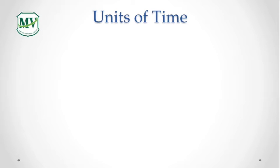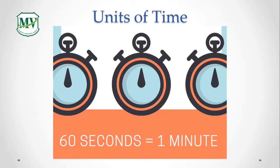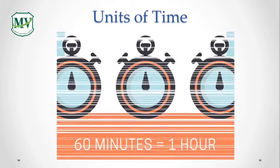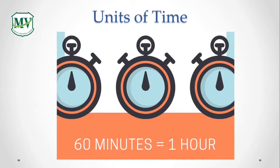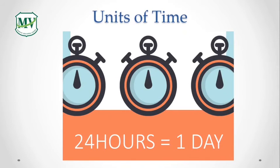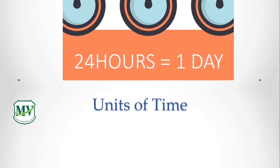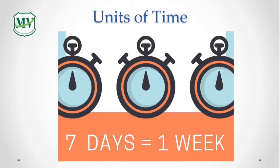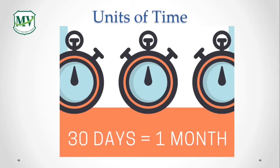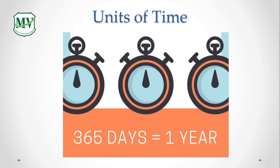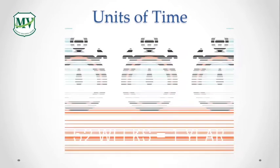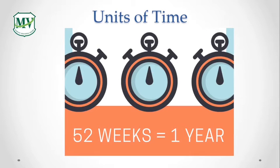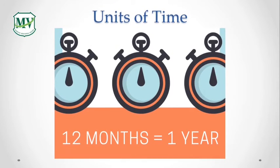We will learn how to convert time between different units as shown on the screen. First, let us remember that 60 seconds equals 1 minute, 60 minutes equals 1 hour, 24 hours equals 1 day, 7 days equals 1 week, 30 days equals 1 month, 365 days equals 1 year, 52 weeks equals 1 year, and 12 months equals 1 year.